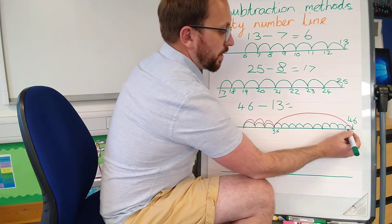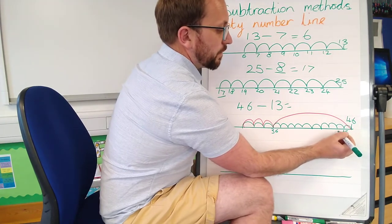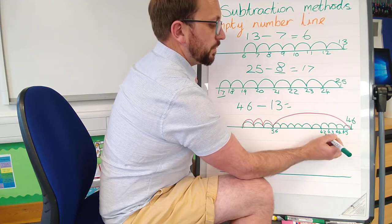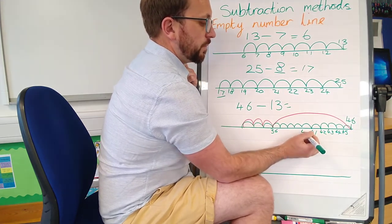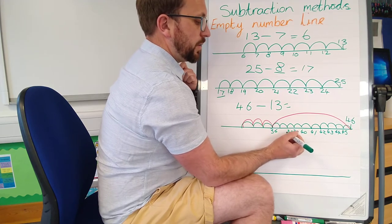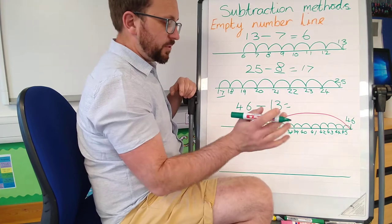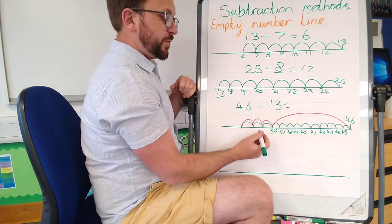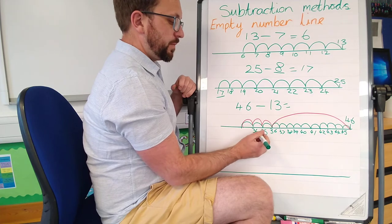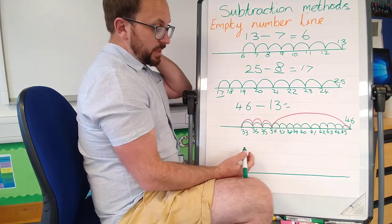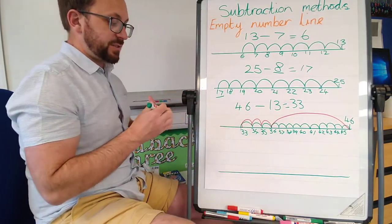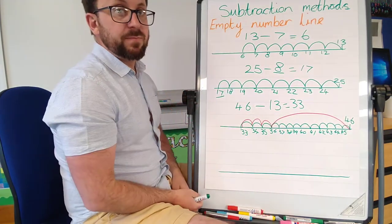Others might go 45, 44, 43, 42, 41, 40, 39, 38, 37, 36. Good, check. And then three more jumps backwards: 35, 34, 33. The answer is 33.